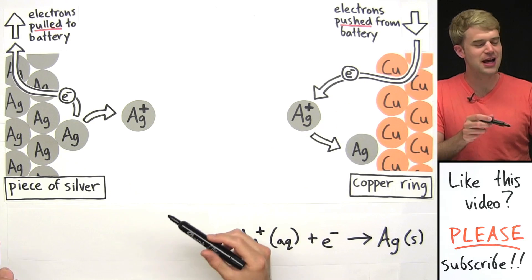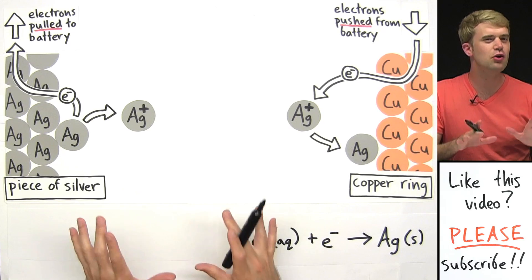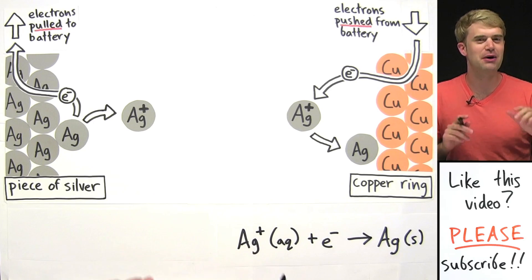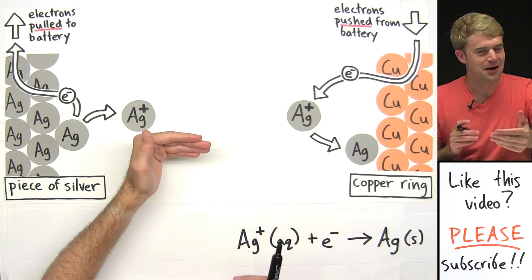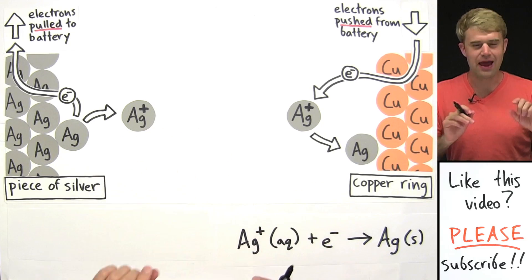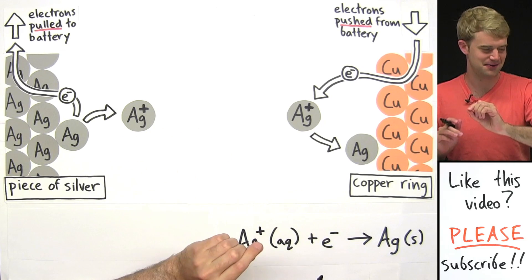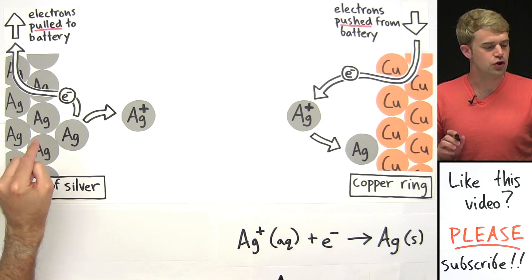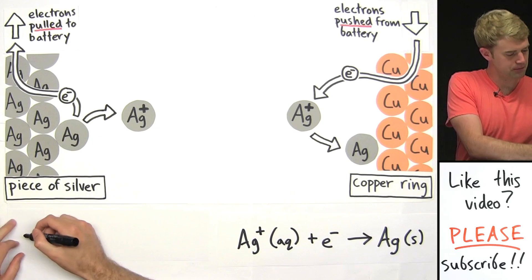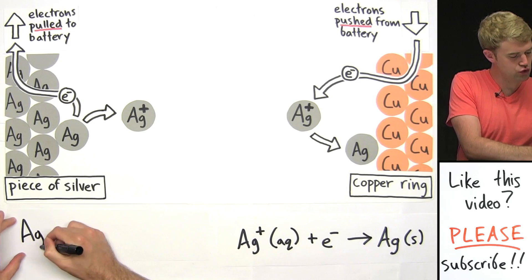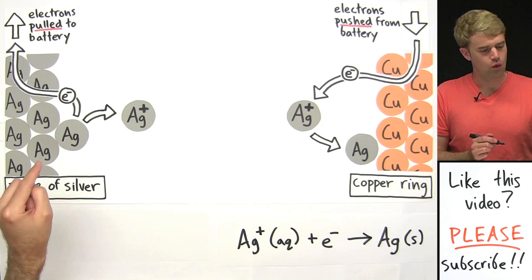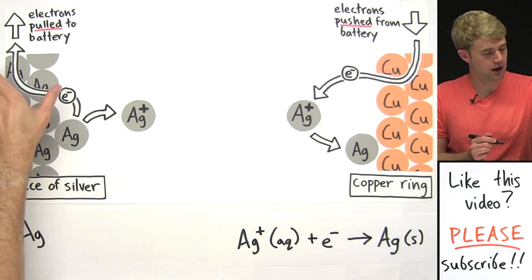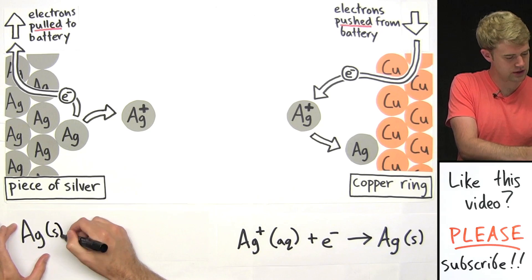Now the equation for what's happening on the piece of silver is a little bit trickier. So I'm actually going to start off by writing it incorrectly, because I think that makes more sense, and then I'll show you how to fix it. Okay, so on the piece of silver, we start with neutral Ag. So a neutral Ag atom, what's its physical state? It's solid. It's part of the solid piece of silver, so there's an S.